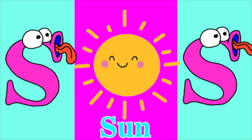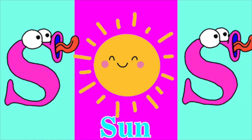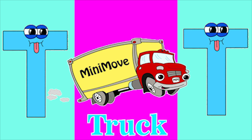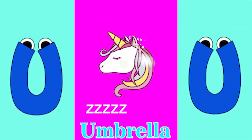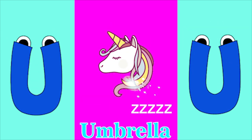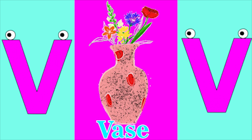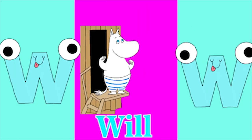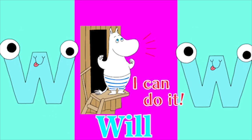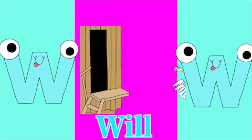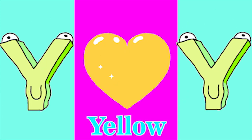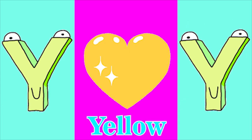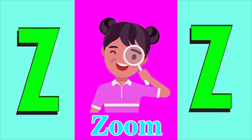S for sun, T for tub, U for unicorn, V for vase, W for whale, X for zero, Y for yellow, Z for zoo.